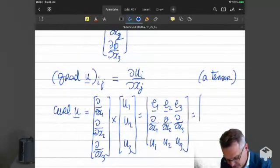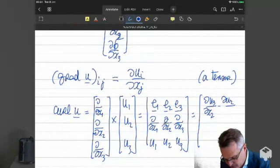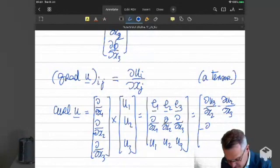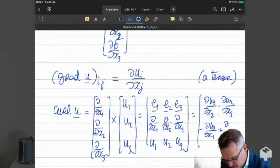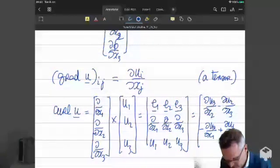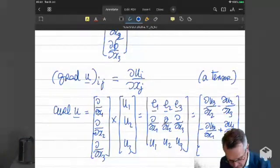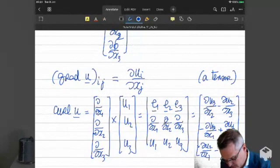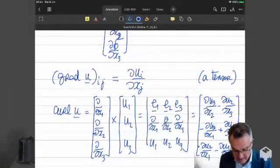For now, you can see that it's just going to be du3 dx2 minus du2 dx3. Then it's going to be minus du3 dx1 plus du1 dx3. And finally, it's going to be du2 dx1 minus du1 dx2. So these are definitions.